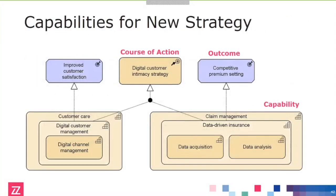First of all, we need to address the capabilities that Arc Insurance needs. It's a new strategy modeled as a course of action in ArchiMate — if you look at the symbol, it's an arrow towards a goal. It needs capabilities to realize the two outcomes of improved customer satisfaction and competitive premium setting. These are capabilities they didn't already have. On one hand, for customer care they want to move to digital customer management and manage digital channels. On the other hand, they want to become a data-driven insurance company that harvests and analyzes data from all different sources to come up with more competitive premiums.